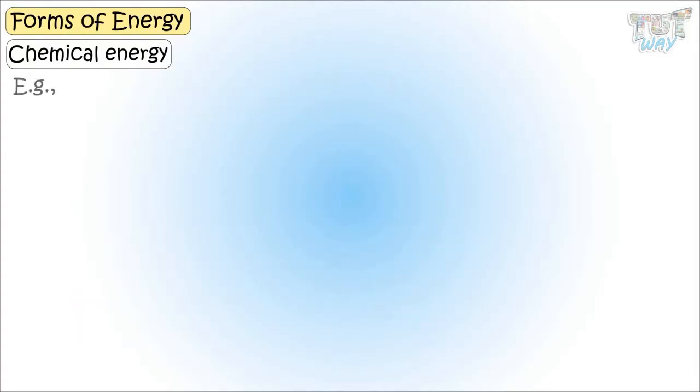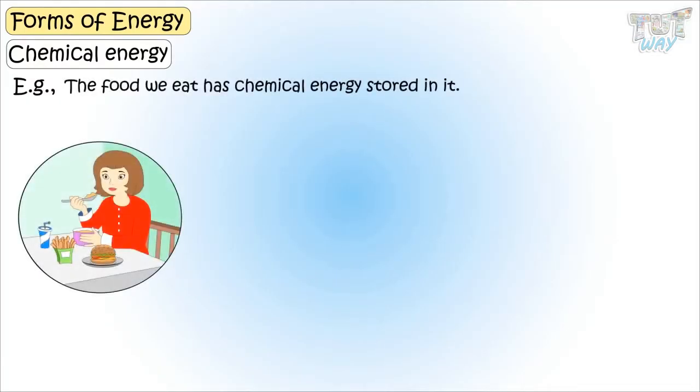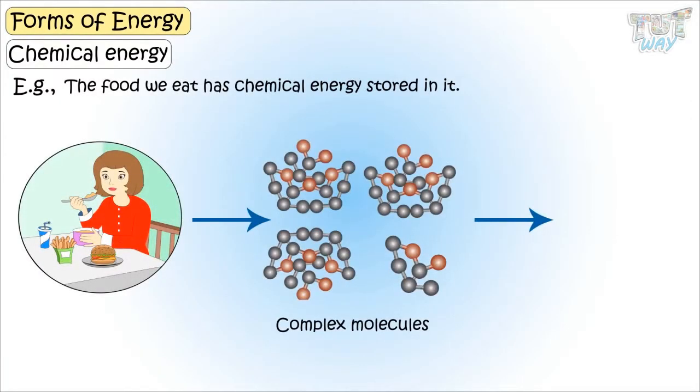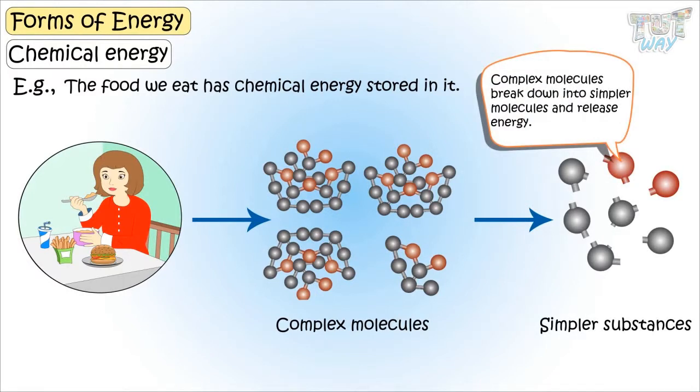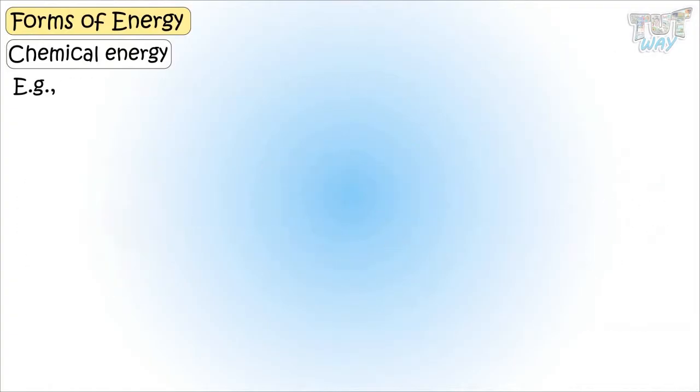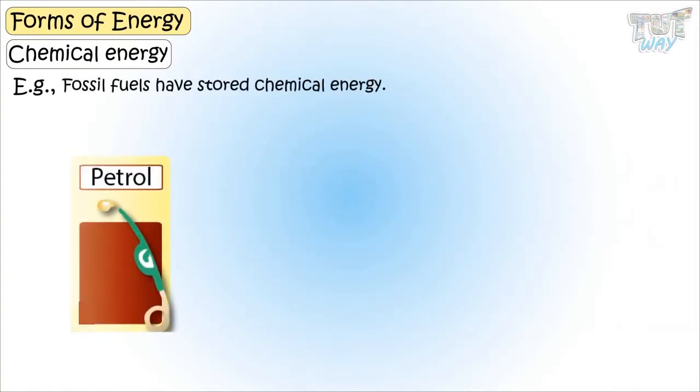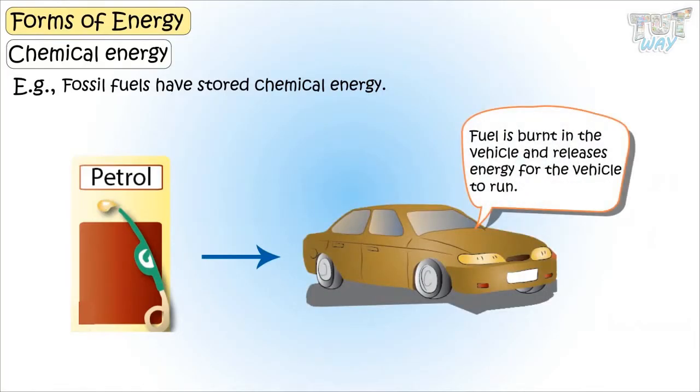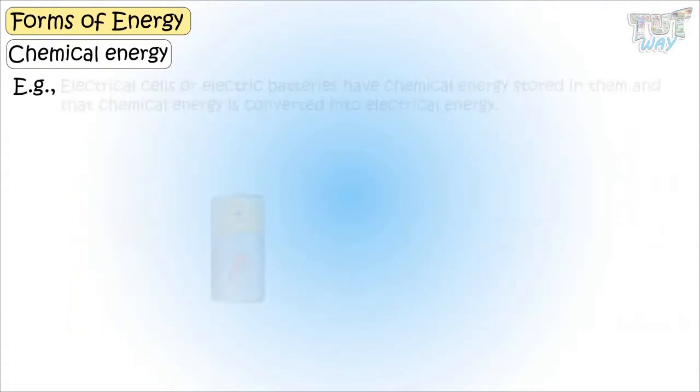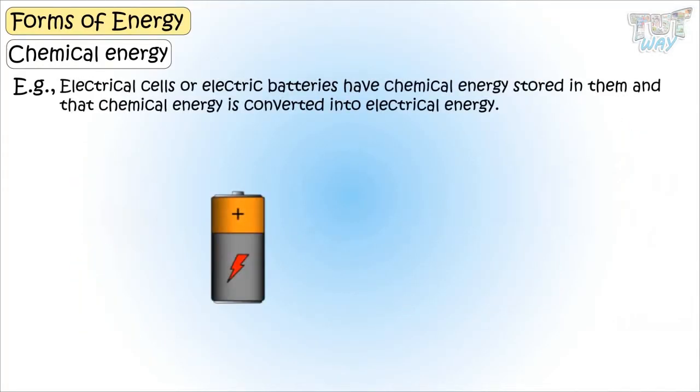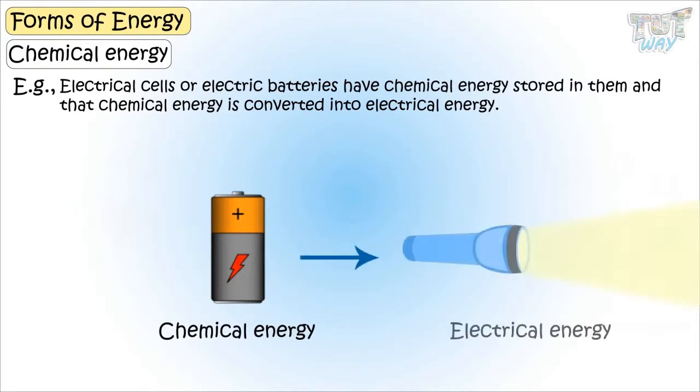Let's see some examples. When we eat food, the complex molecules of food are broken down into simpler molecules and release this chemical energy. And this is the energy that we use to do our daily activities. Fossil fuels have stored chemical energy in it. And it is released when the fuels are burnt inside the vehicle and that energy is used by the vehicle to run. Electric cell or electric battery have chemical energy stored in them. And that chemical energy is converted into electrical energy.